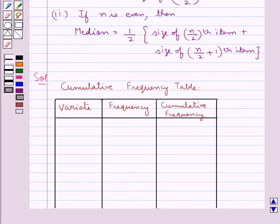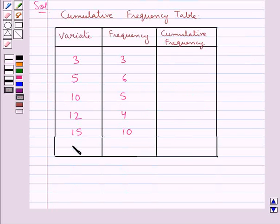We write the data again, that is the variate and the frequency again in this cumulative frequency table. For the variate 3 the frequency is 3, 5 it's 6, for 10 it's 5, for 12 it's 4, for 15 it's 10 and for 20 it's 3. So let's calculate the cumulative frequencies.